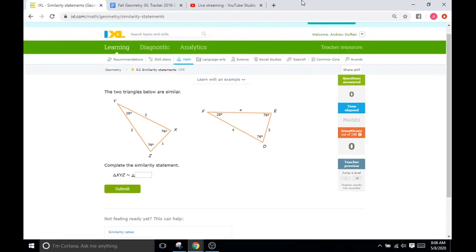These IXL problems give you a series of triangles and a statement to complete. A similarity statement indicates that two shapes are similar. For example, corner X is 76 degrees.